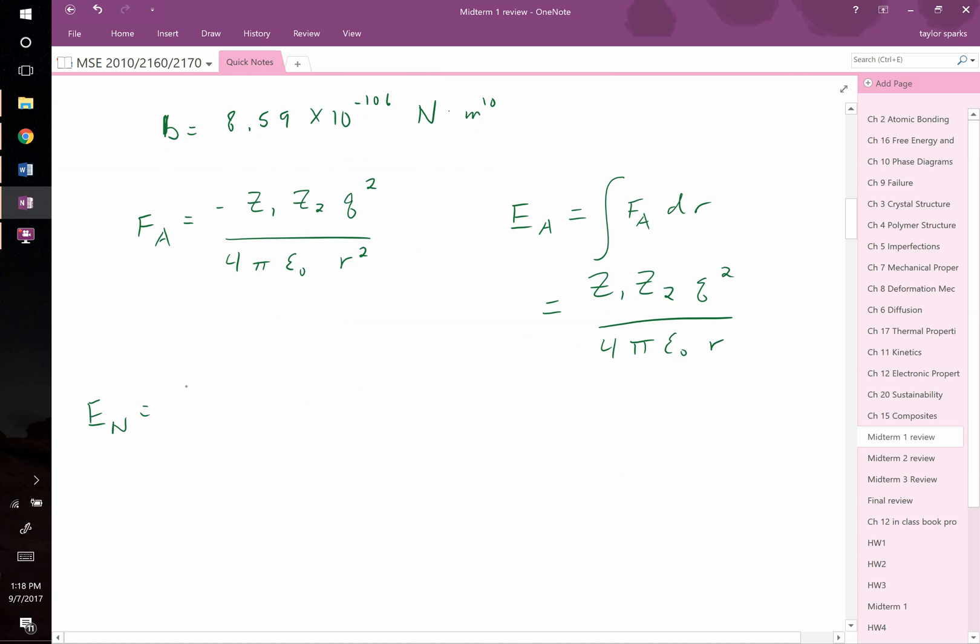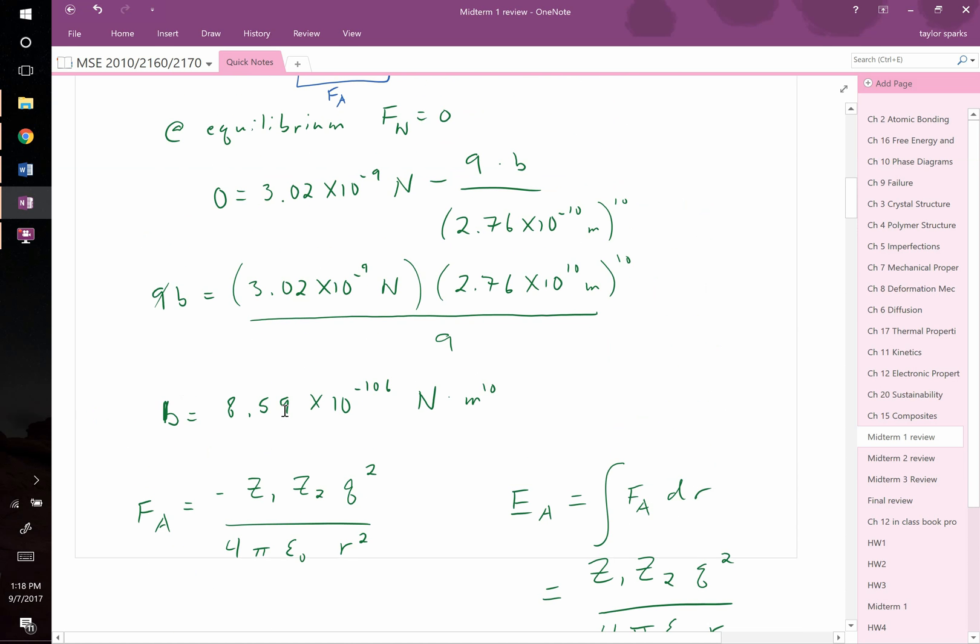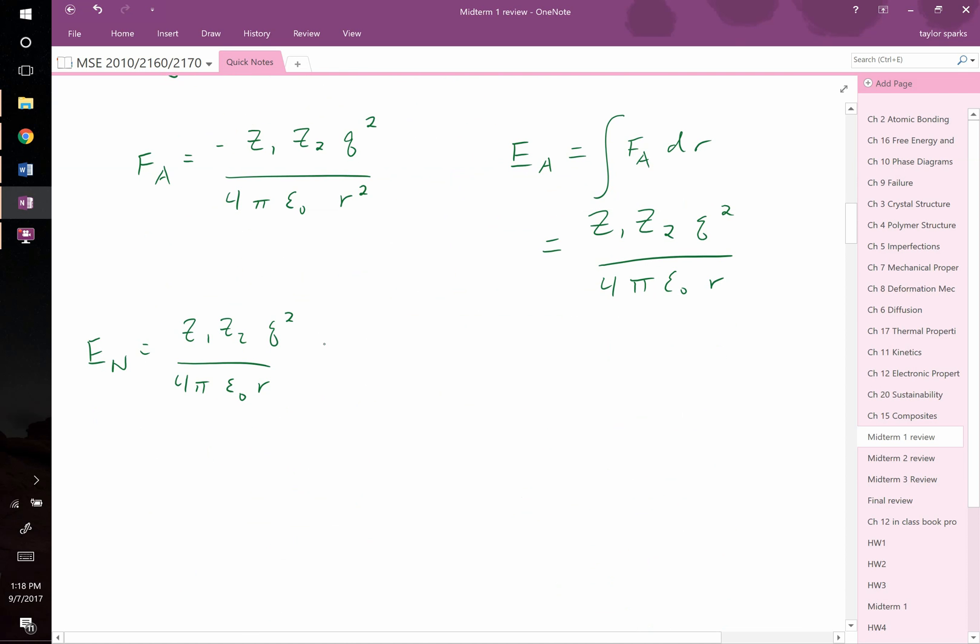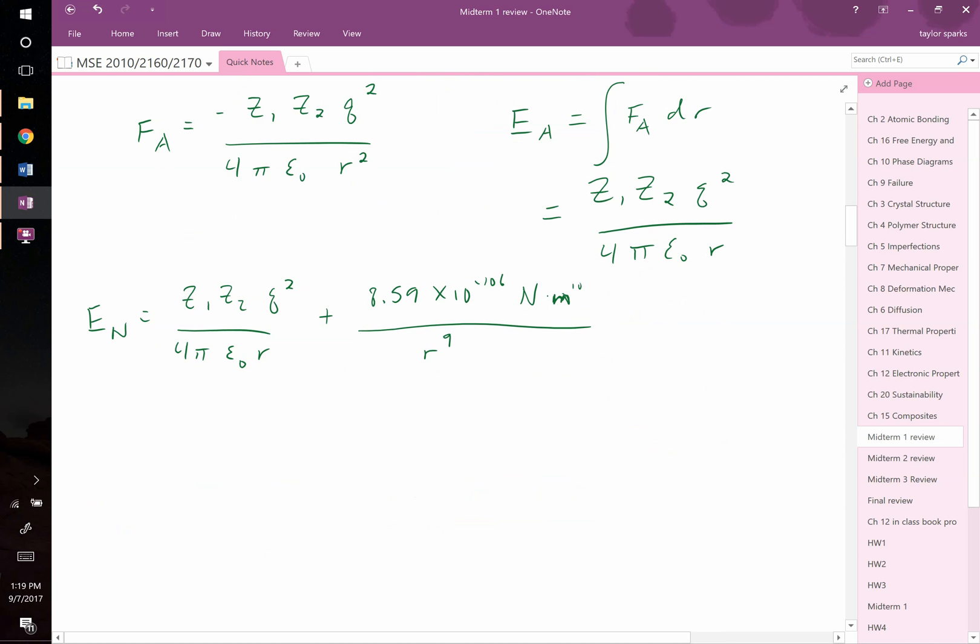The net energy is equal to Z1 Z2 Q squared over 4 pi epsilon naught over R. This will be plus our repulsive energy term, which we now know since we know B. This will be plus 8.59 times 10 to the negative 106th power newton times meters to the 10th, all divided by R to the 9th power. Plugging values in...